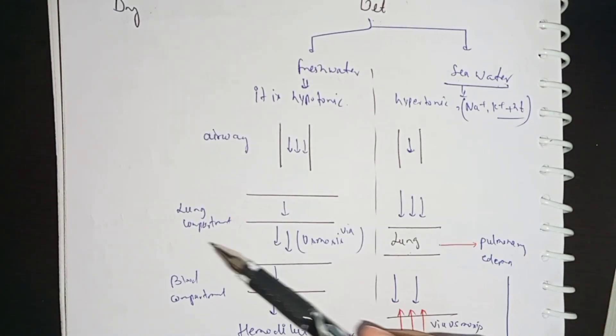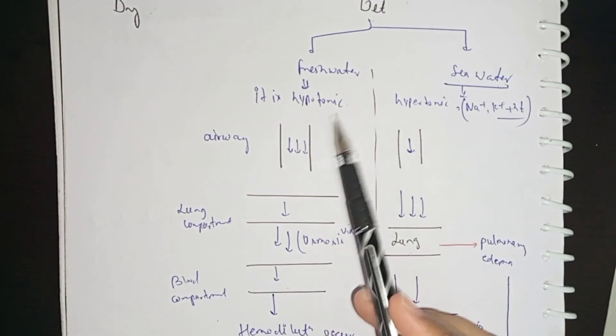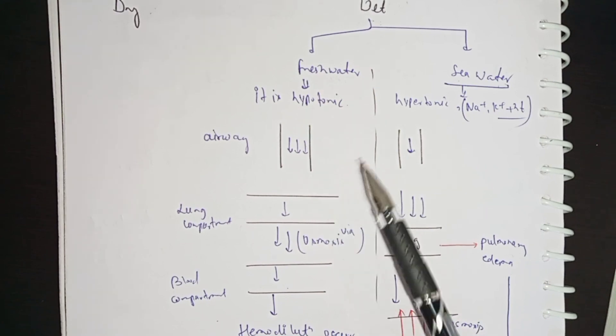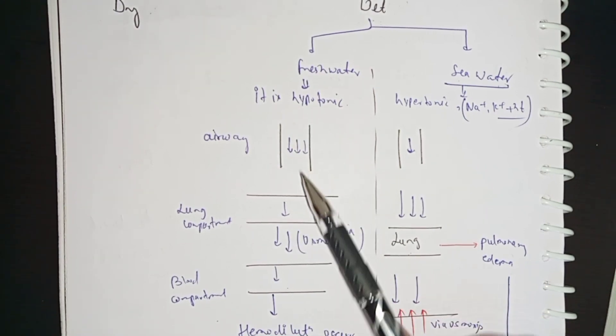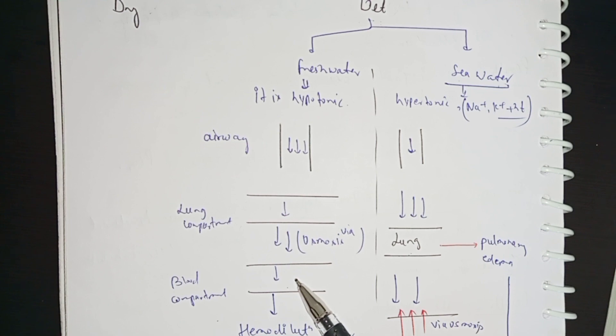Similarly, the fluid flow - the fresh water will follow the same path to the body. First it will go in airway, then your lung, and then go in blood compartment. Which process helps you? Osmosis.